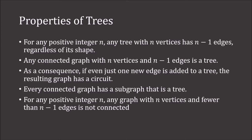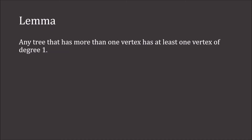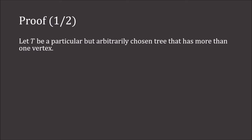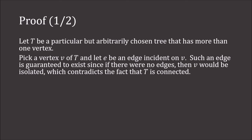We're going to prove some of these. First we're going to need this lemma: any tree that has more than one vertex has at least one vertex of degree 1. Let t be a particular but arbitrarily chosen tree that has more than one vertex. Pick a vertex v of t and let e be an edge that is incident on v. Such an edge is guaranteed to exist, since if there were no edges, then v would be isolated, which contradicts the fact that t is connected.